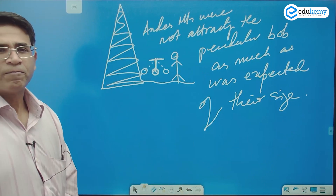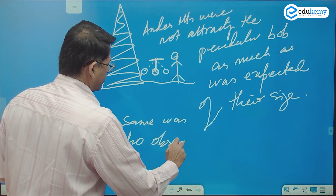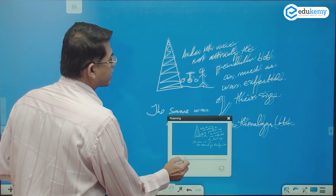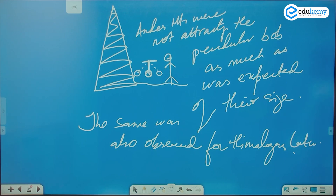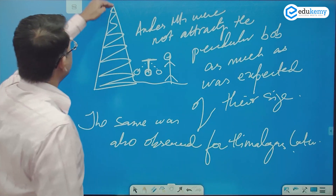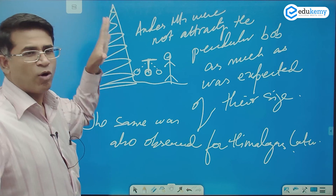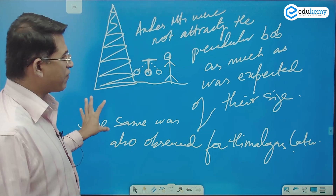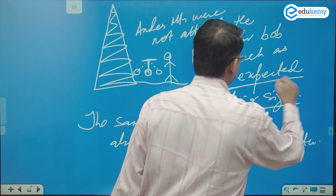The same phenomenon was later observed for the Himalayas. Mountains have been one of the most studied features on the Earth's surface. They found that such a huge mountain was not capable of attracting the pendulum bob as expected. According to the gravitational principle, if something has more mass it must attract more — but both the Andes and the Himalayas were not attracting as expected of their size. These observations became the basis of isostasy.